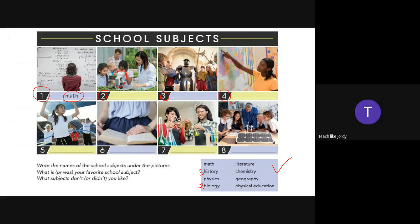Number four: a woman is pointing at a map — peta Amerika. So that must be Geography. Number five: you can see a hula hoop, and they are moving — bergerak. That is a Physical Education class — olahraga. In English we call it Physical Education.